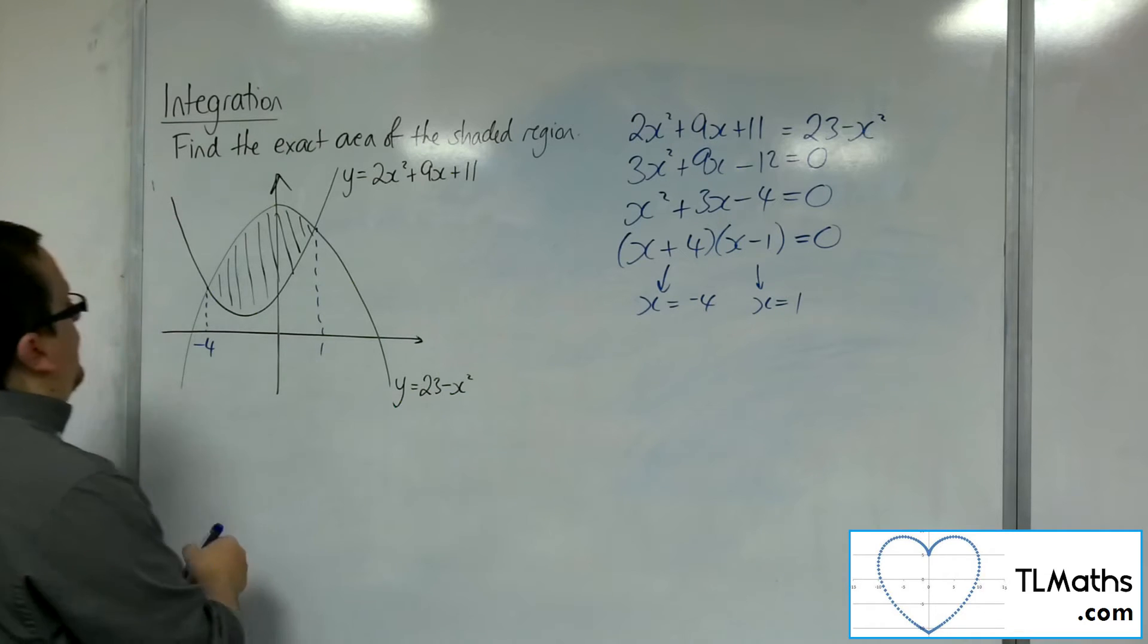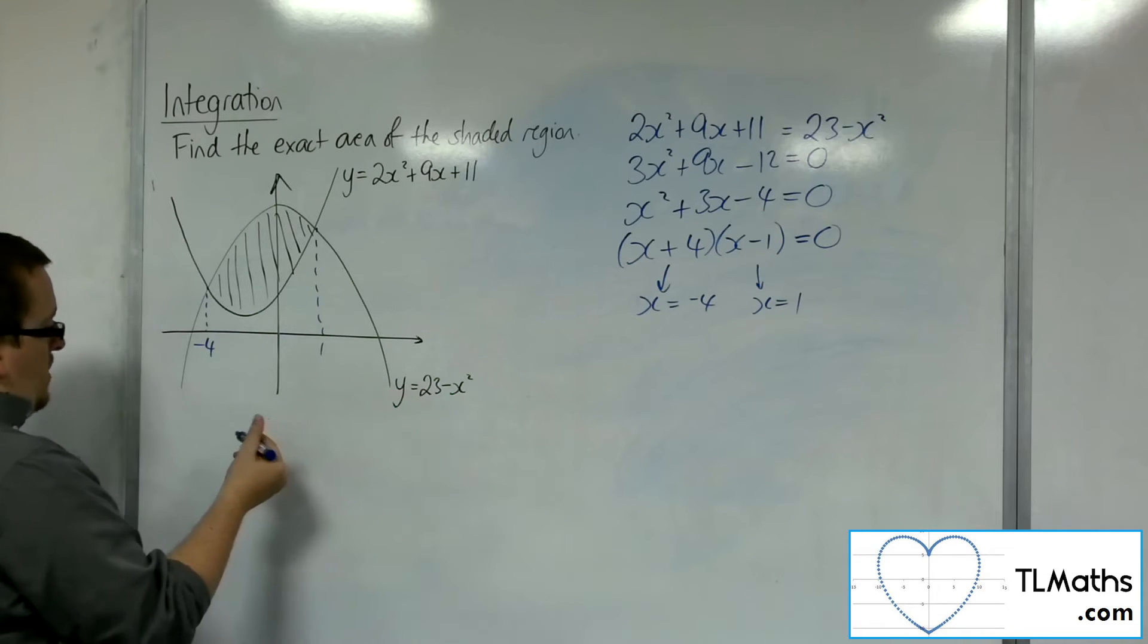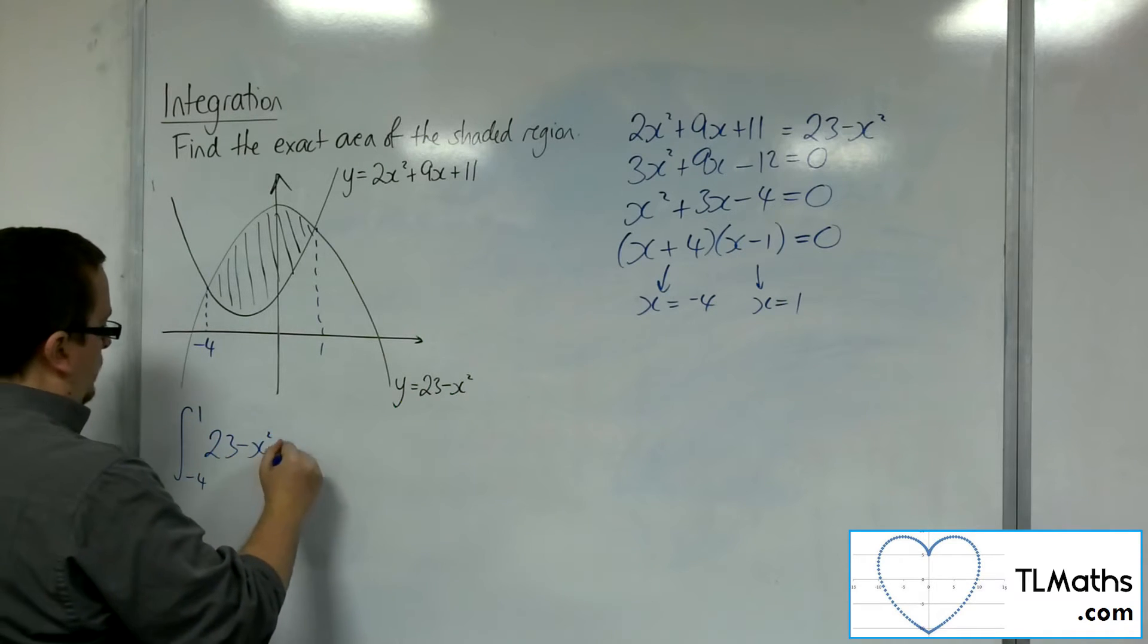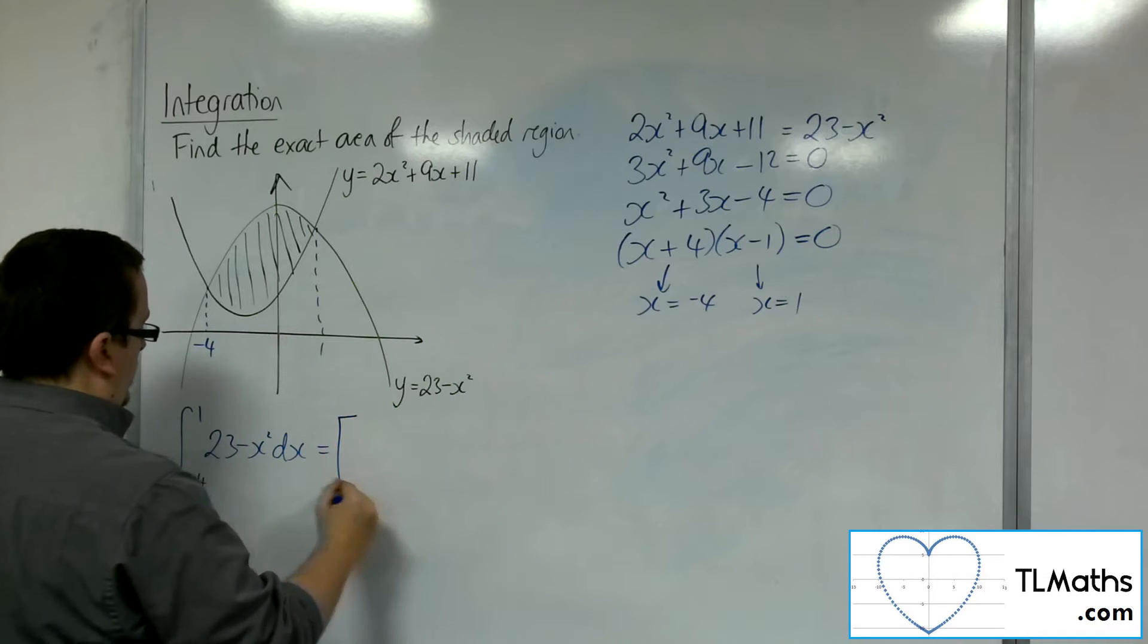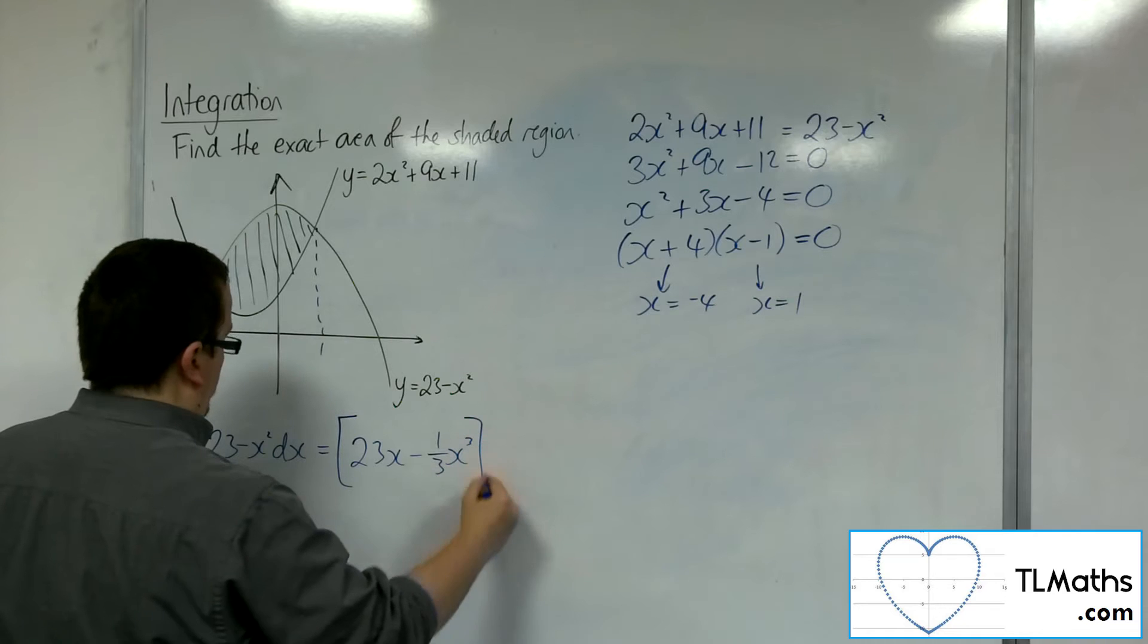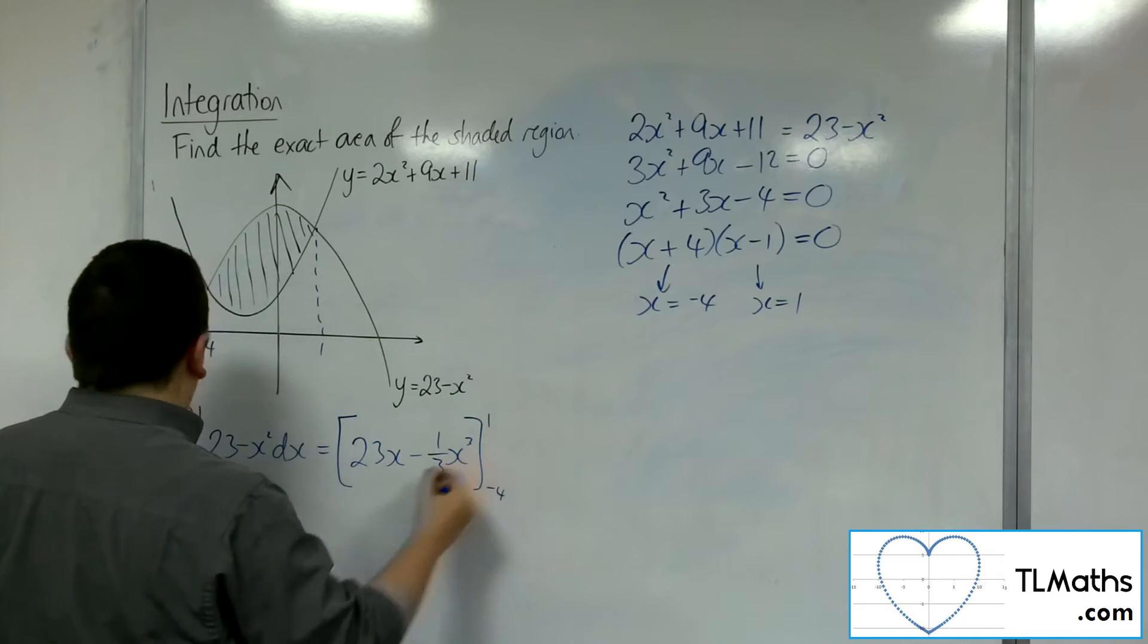So I first of all want to integrate the 23 minus 2x squared between minus 4 and 1. So we're going to have 23x minus 1 third x cubed, evaluated between minus 4 and 1.